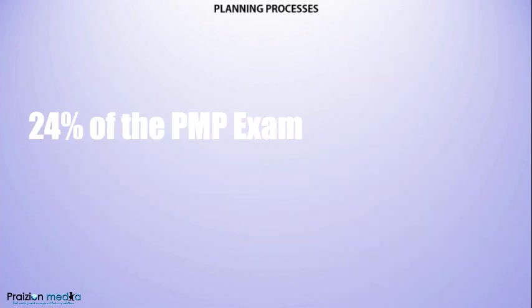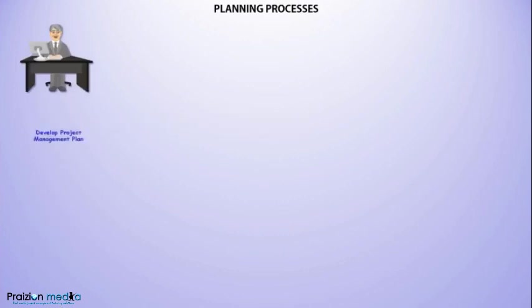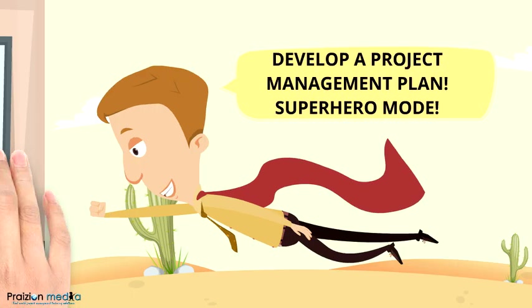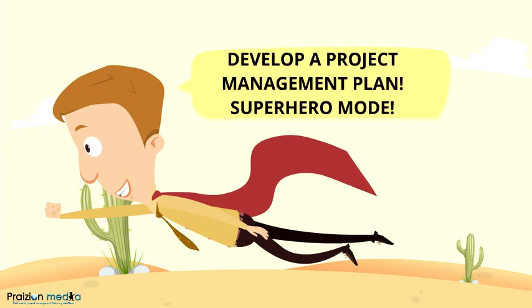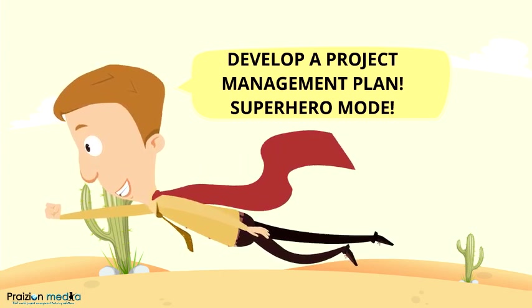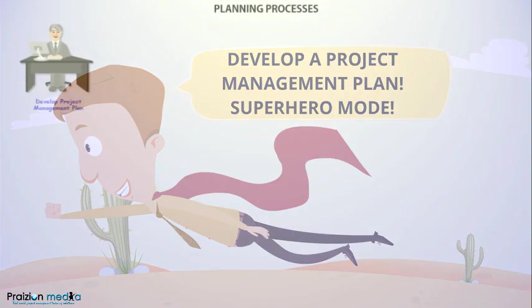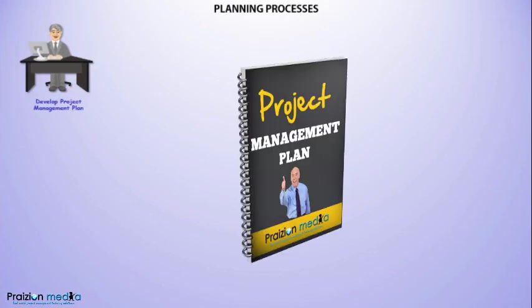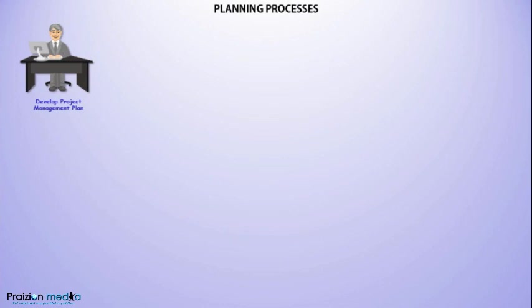The next process group is the Planning Process Group. There are 24 processes here, and this represents 24% of your exam. The first process is Develop Project Management Plan, where the Project Management Plan is put together. This process integrates everything else that happens after it and creates direction and focus for how subsidiary plans will be developed, their look, their feel, and so on.